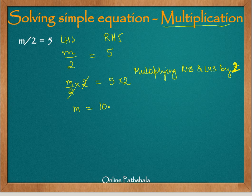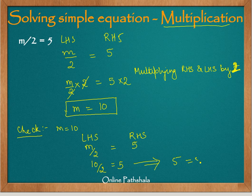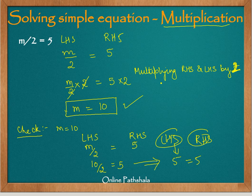So m equals 10 is our solution. We check by substituting m equals 10 in the equation. We have m divided by 2 equals 5, so putting in 10: 10 divided by 2 equals 5, which gives 5 equals 5. The left hand side equals the right hand side, therefore m equals 10 is a solution to the equation.